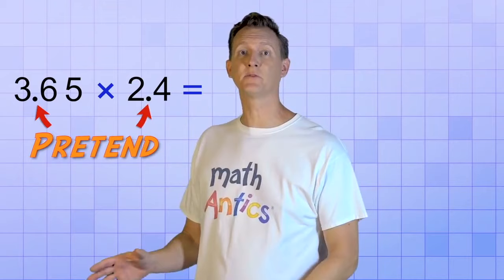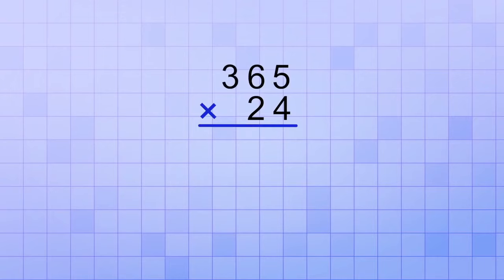I knew you would say that. Let's say that you need to multiply 3.65 by 2.4. Now that seems a little tricky, but what if we just pretend that the decimal points are not there for now? In other words, what if we pretended that the numbers were 365 and 24? You already know how to do that problem.